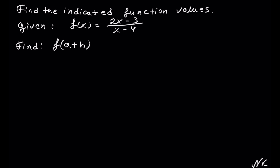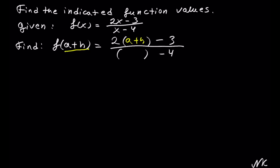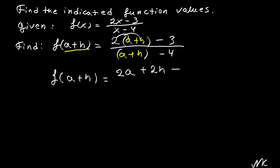Here we're going to calculate f of a plus h of the function that is 2x minus 3 out of x minus 4. Instead of x, we're going to plug in a plus h. Following the order of operations, we distribute 2: f of a plus h equals 2 times a plus 2 times h minus 3 in the numerator, out of a plus h minus 4 in the denominator. We have no like terms in the numerator or denominator and there is nothing we can cancel out, so this is our solution.